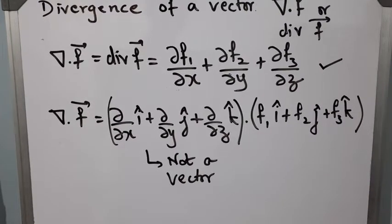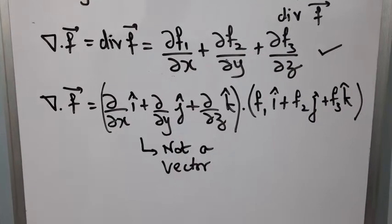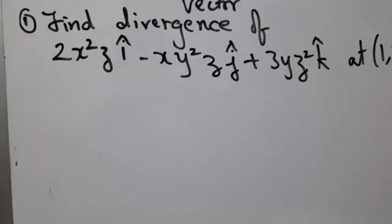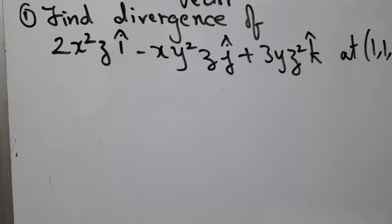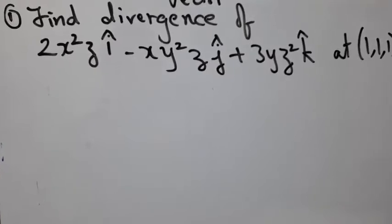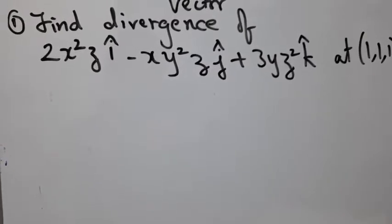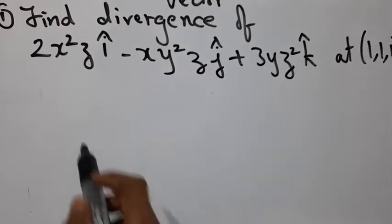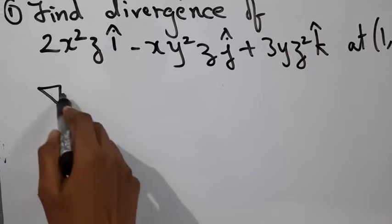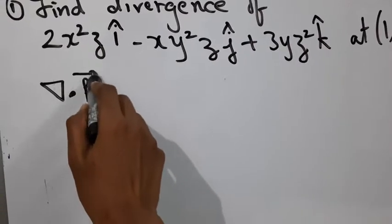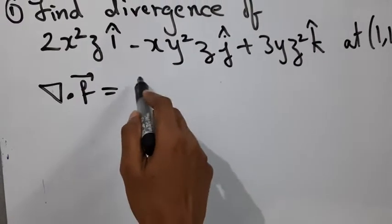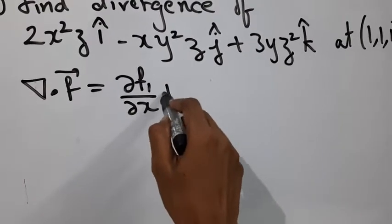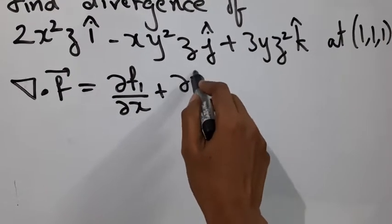We will consider an example. Find the divergence of 2x squared z i cap minus x y squared z j cap plus 3y z squared k cap. Divergence of vector f is given by the sum of the partial derivatives of the components.